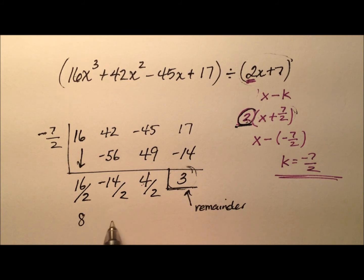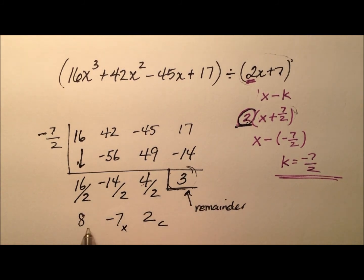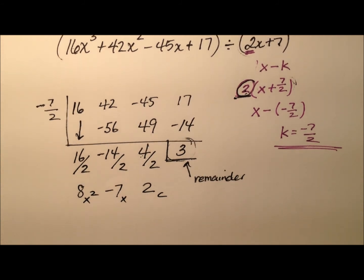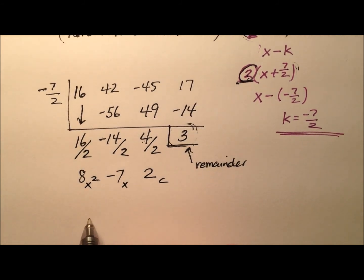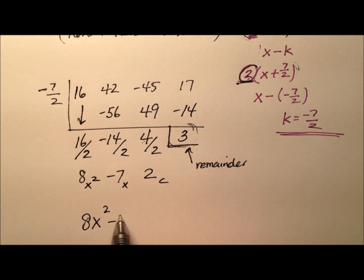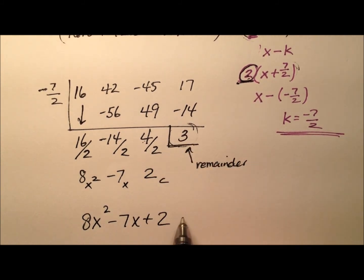So let's run this 2 through and just divide that 2 by all of those. So I'll have 8, negative 7, and 2. Here's my constant, my linear term, and my quadratic term. So when I write this, 8x squared minus 7x plus 2 is my quotient.